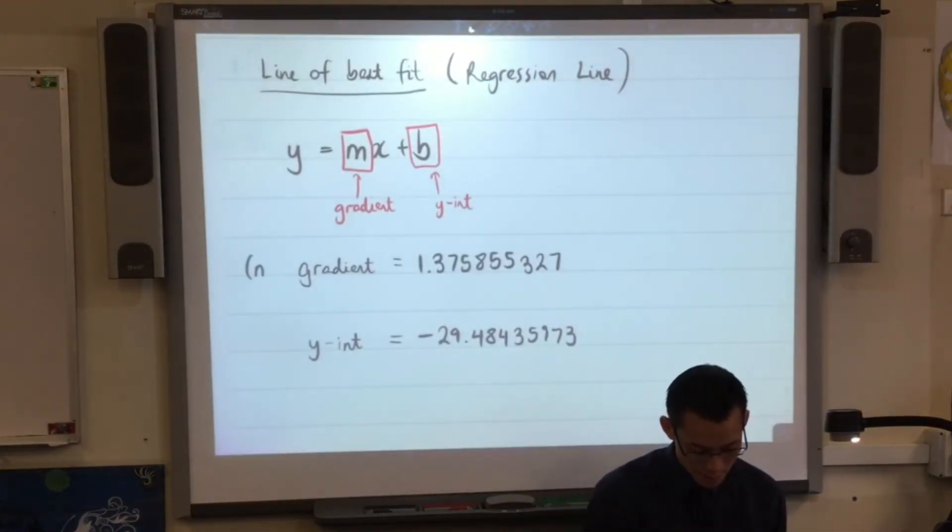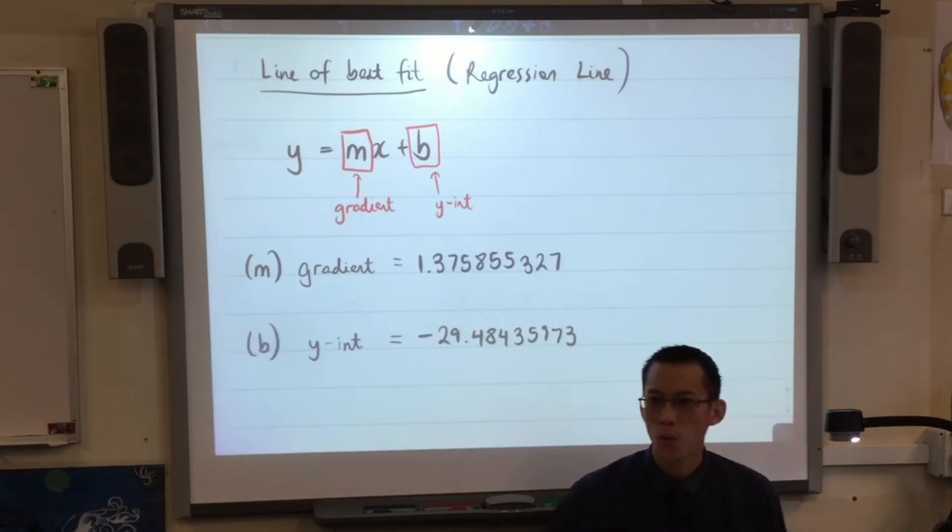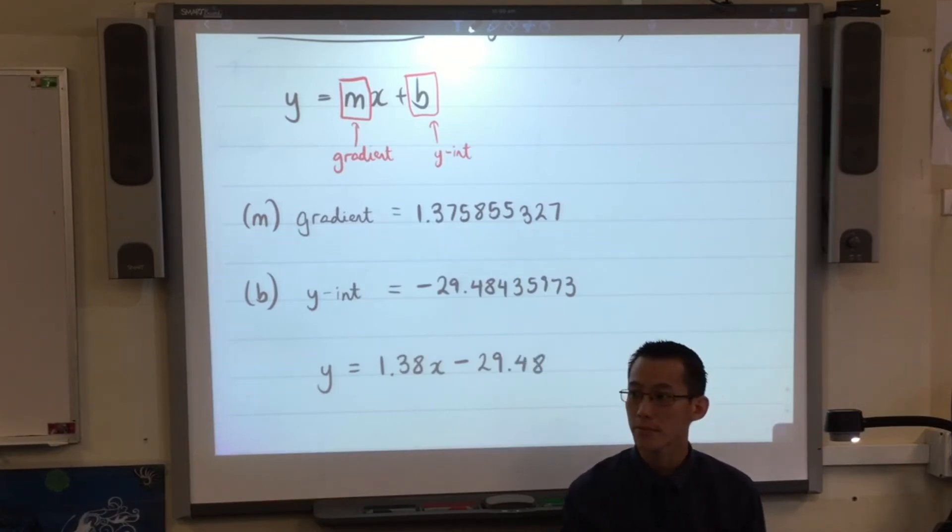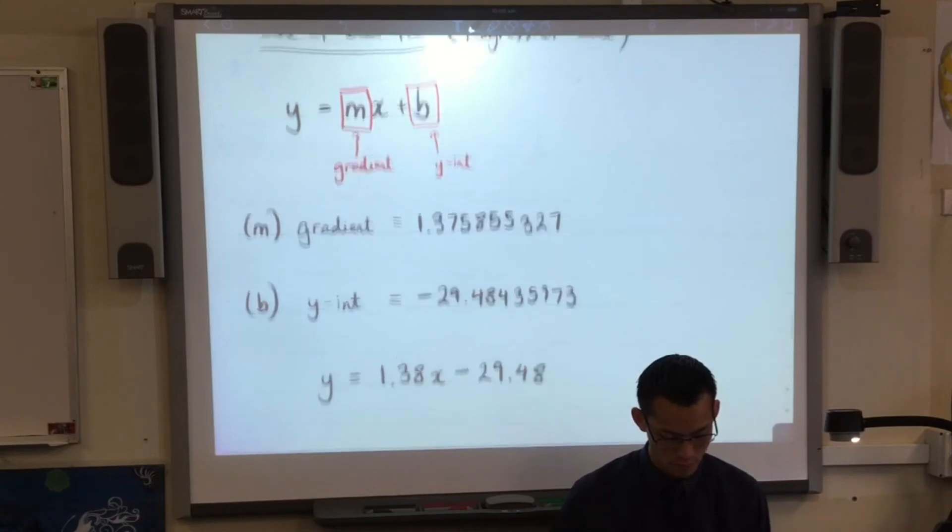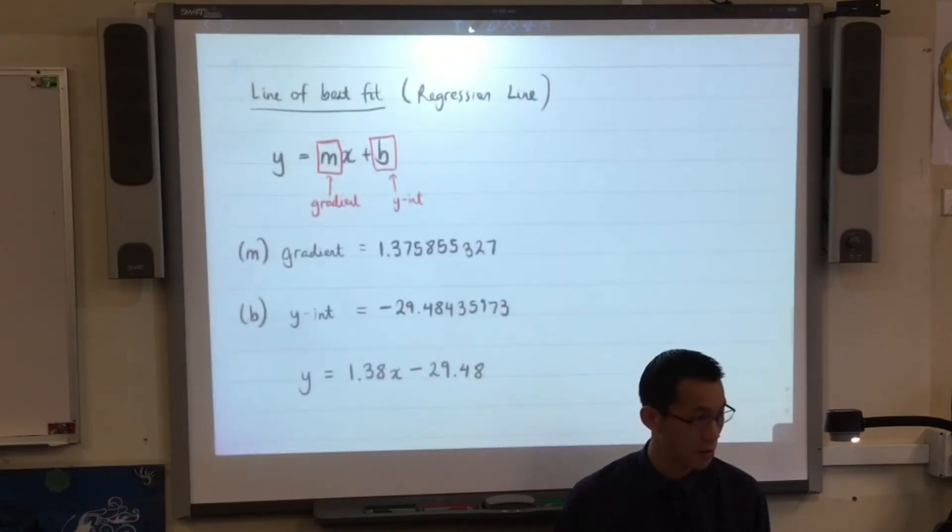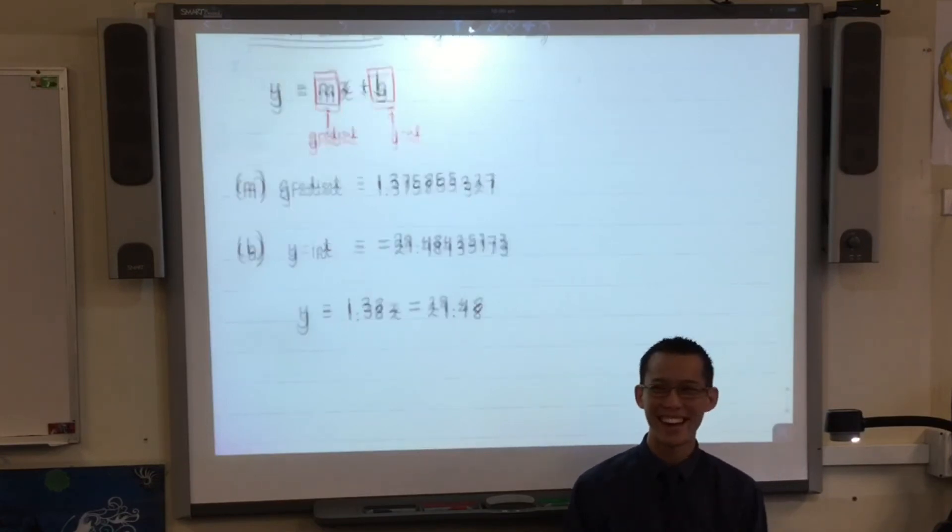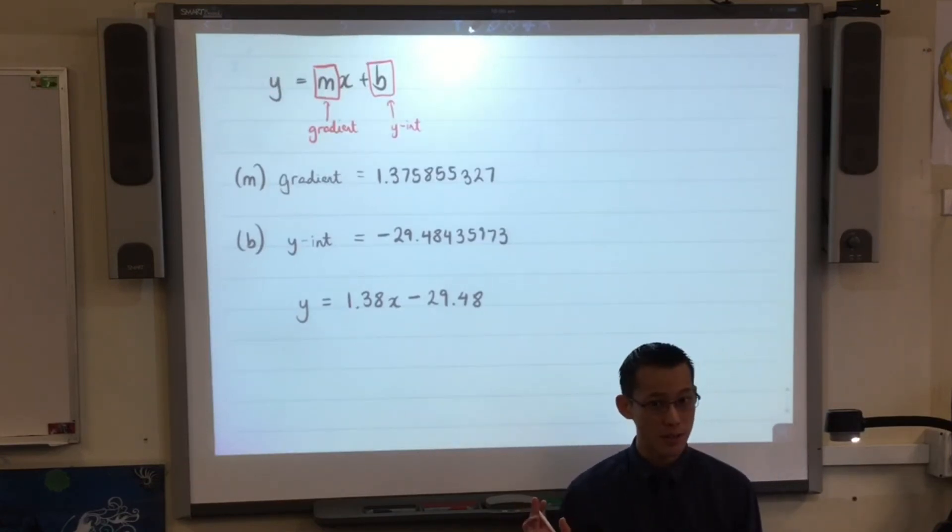This was M, and this was B. So what is the equation? The equation will be Y equals, and I'm going to approximate this. So I'm probably going to write 1.38x minus 29.48. What do you think? I can't see this. Oh, sorry. My head. It's my head. So this is what my page says.